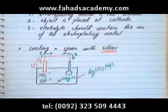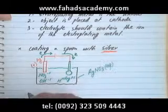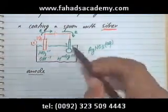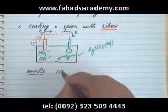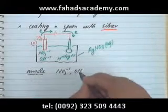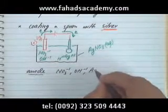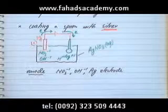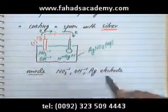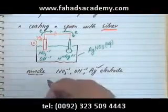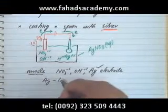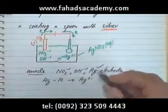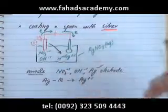Now let's figure out how electrolysis proceeds. At the anode, the battery tries to take electrons — the three candidates are NO₃⁻, OH⁻, or the silver electrode itself. Since the electrode is made of silver, and the anode always dissolves, it is the silver electrode that loses electrons, forming Ag⁺ ions which become part of the solution.